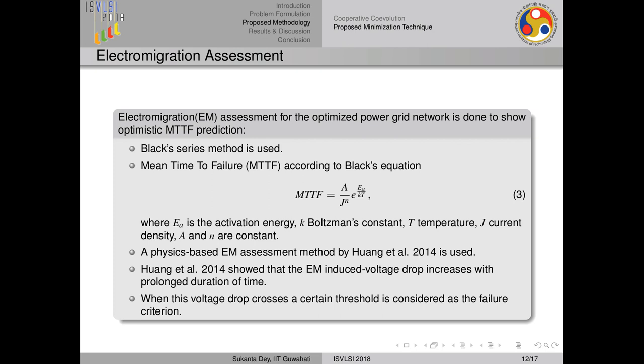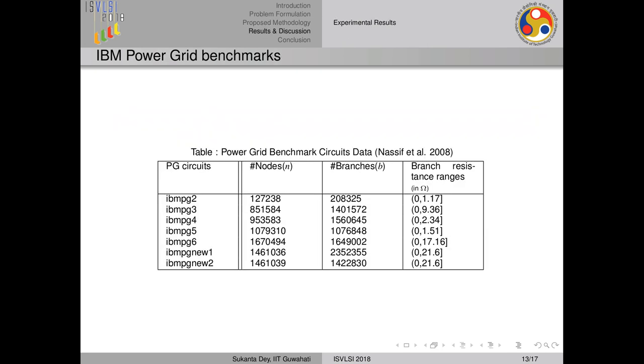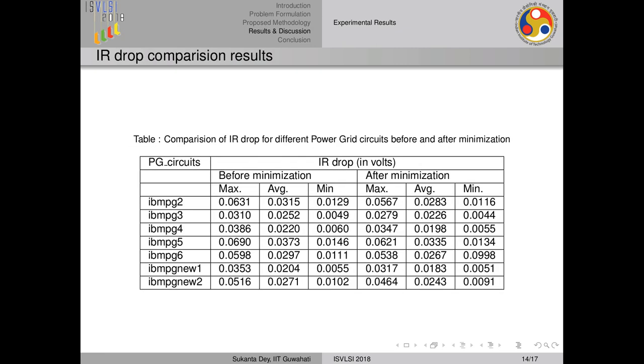We implemented all algorithms in MATLAB on a Linux-based system with 632 GB memory, and tested on IBM power grid benchmarks — standard benchmarks available online. These benchmarks have different numbers of nodes, branches, and given resistances. For this data, we performed worst-case IR drop minimization. As you can see, before minimization all IR drops are greater than after minimization, demonstrating significant IR drop reduction using our proposed method for all circuits.